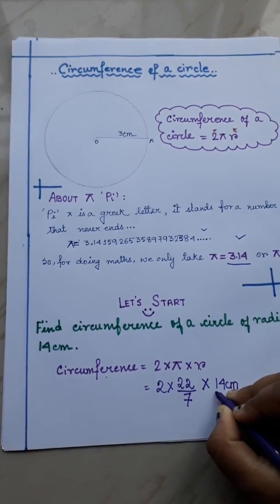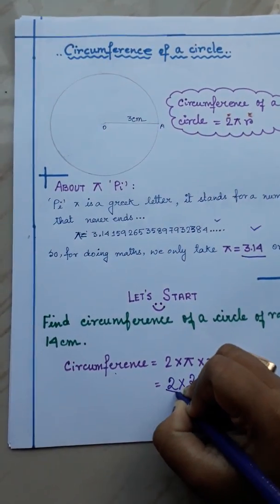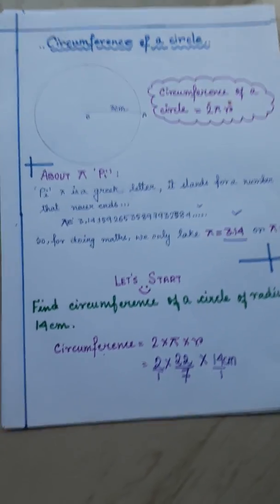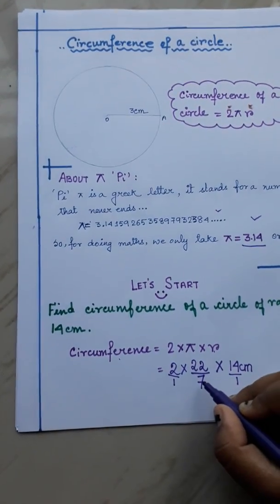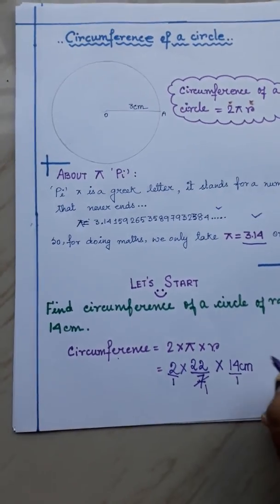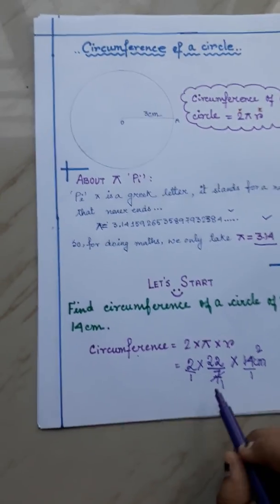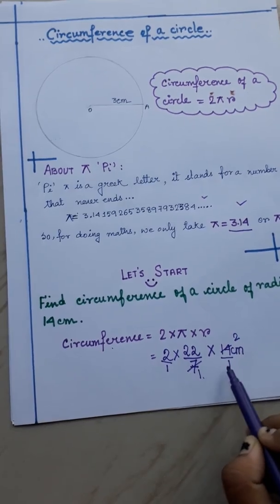Here, nothing is below 14. That means 1 is there. Here, nothing is below 2. That means 1 is there. Now, we will cut 7 and 14. That means 7 ones are 7, 7 twos are 14. And below now, there is 1, 1, 1.